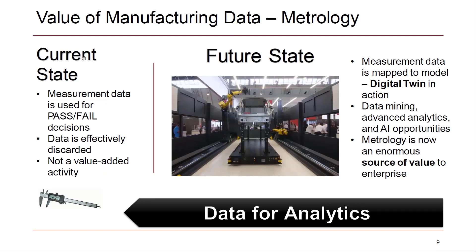The current state of how data is used in metrology is that measurement data is mostly used for pass-fail decisions. An article is measured, a pass or fail decision is rendered, and then the data is either discarded or effectively discarded — printed or written by hand onto a document, scanned to a PDF, or put into an Excel file stored on a hard drive. Technically the data might still be available, but it's not useful in any practical sense. In this paradigm, metrology is not viewed as a value-added activity but as a necessary evil to filter out defective parts.